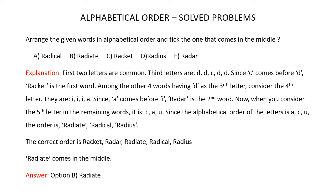Among the other four words having D as the third letter, you have to consider the fourth letter: I, I, I, and A. Since A comes before I in the alphabet series, Radar is the second word. Now you are left with Radical, Radiate, and Radius. The first four letters RADI are common in these three words, so you have to consider the fifth letter: C, A, and U. Since the alphabetical order of these letters is A, C, U, the order is Radiate, Radical, and Radius.